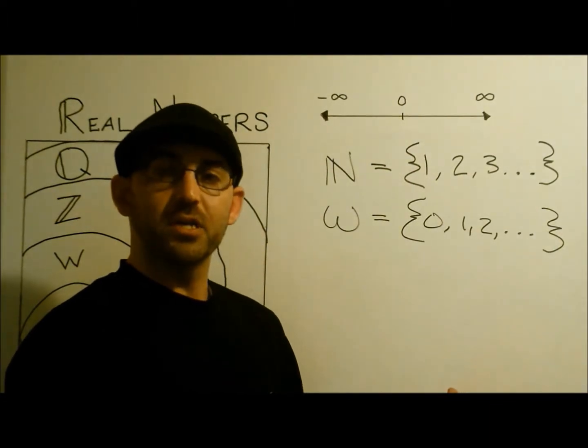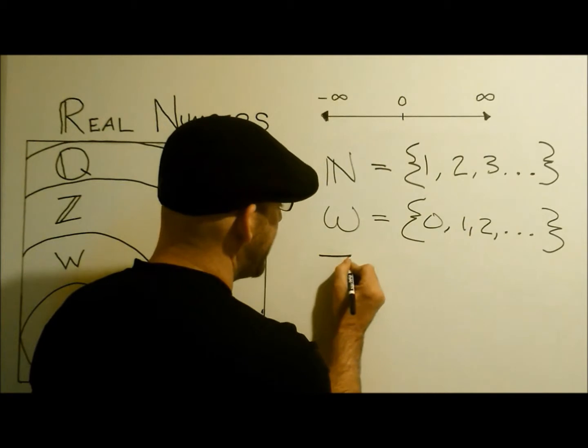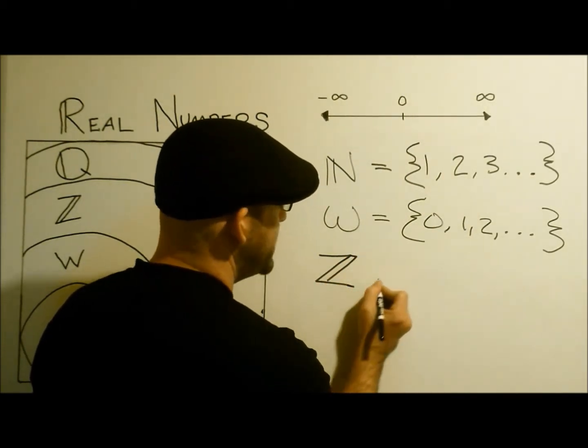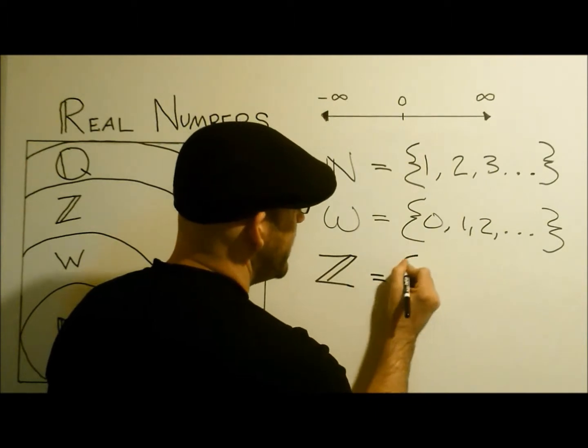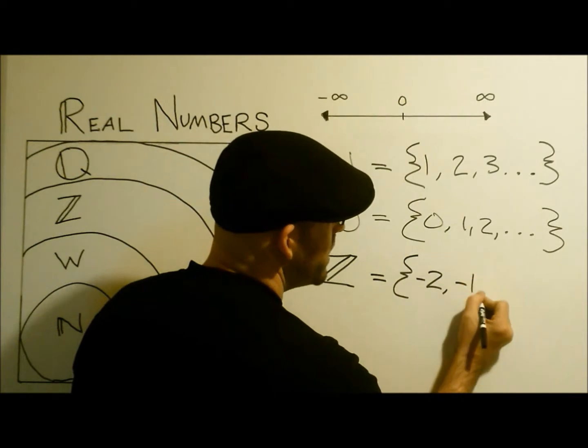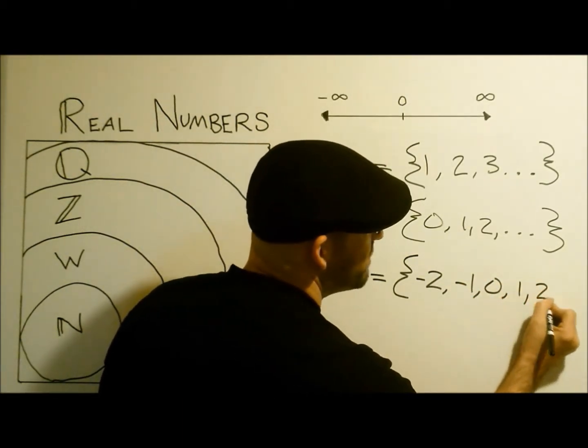What about the negative numbers? This is where the integers come into play. We signify the integers by the large Z. The Z stands for ZOL, which means numbers in German. They include all the negative numbers, like negative two, negative one, plus all the whole numbers, all the way to infinity.